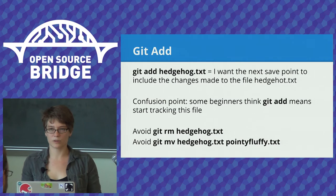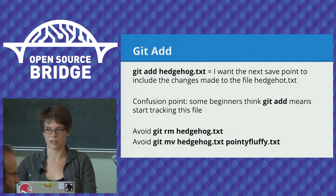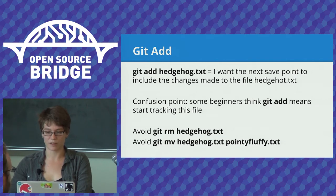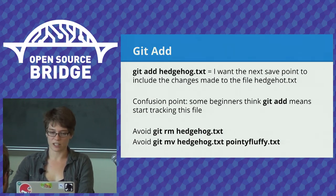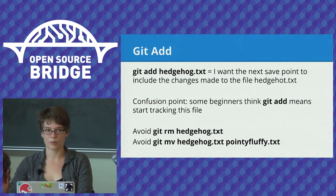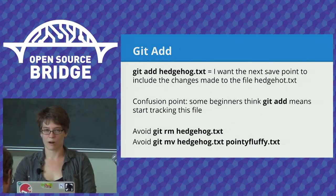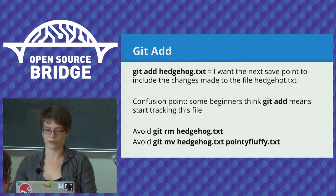With git add, a lot of people seem to think it means 'start tracking this file' — which the first time it does. But then every time after that it means 'I care about the changes in this file and I need them to be saved together with the rest of this stuff we're saving at the same time.' Make sure you explain that — it doesn't mean 'from now on automatically save all changes to this file.' Also, I don't think it's helpful to teach git rm and git move on day one. What add does is fairly straightforward, but what rm and move do is more confusing, and that's a good thing to tackle a couple weeks in.